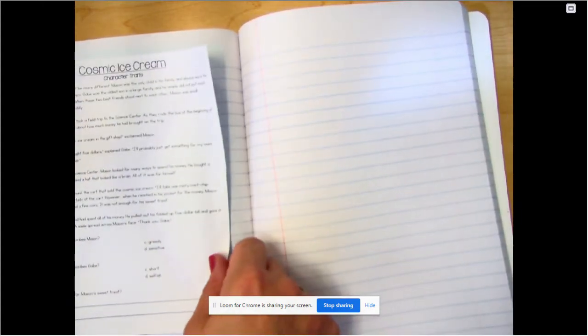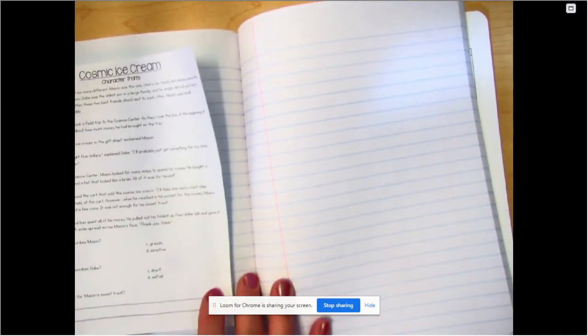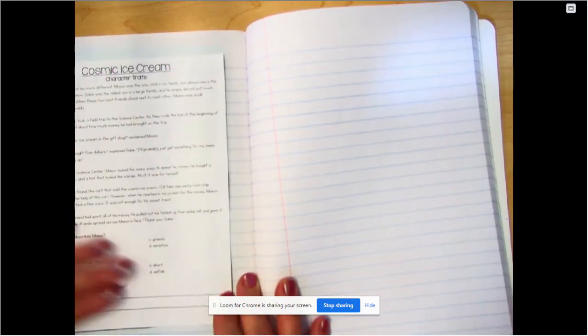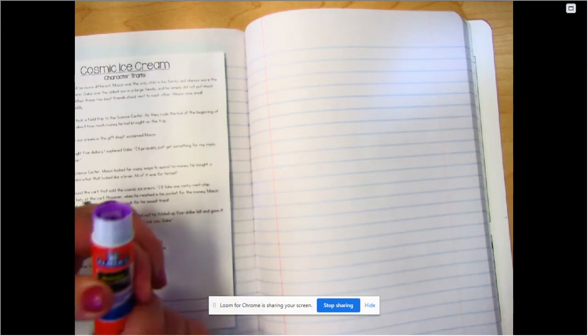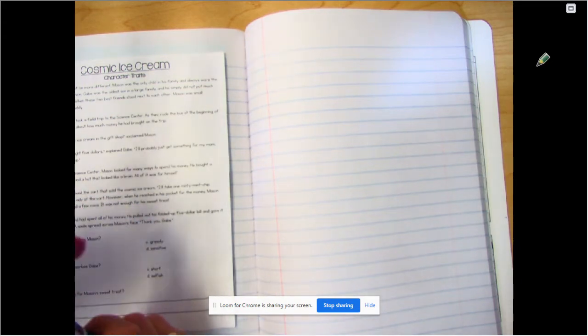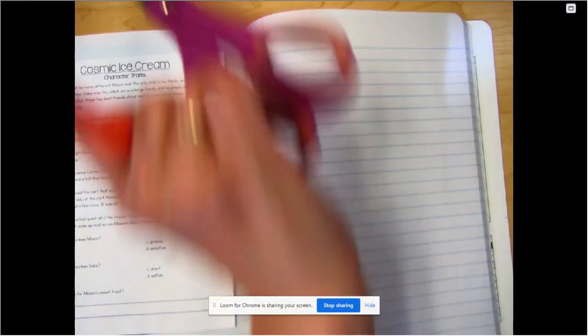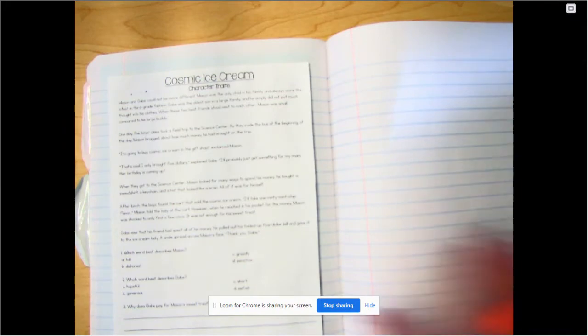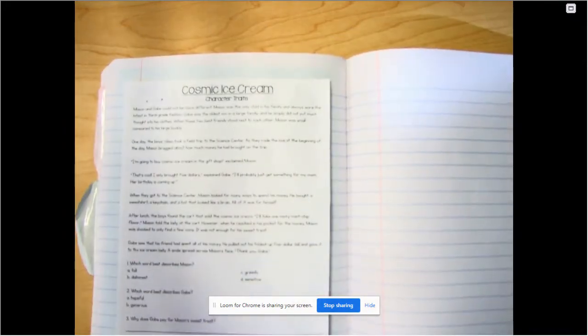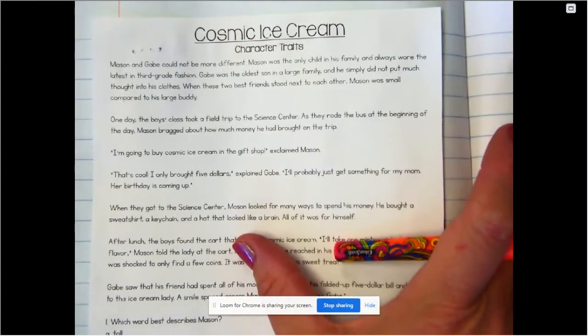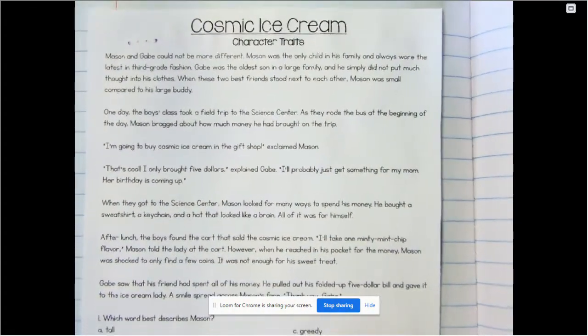It's enough glue right there, let's just turn it over. So once you have this glued in, we're going to get close and I'm going to read the story to you and you can read along in your book. It says Cosmic Ice Cream, Character Traits.